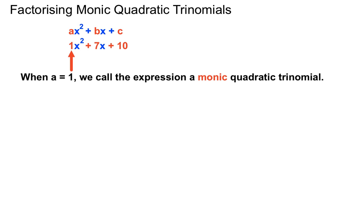When that front number, a, is 1, that's where we get the term 'monic' — mono meaning one, like monorail meaning one rail. So when a equals 1, we call the expression a monic quadratic trinomial.